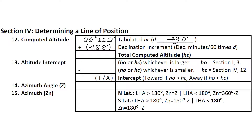Now we simply sum these two terms to get the computed altitude, abbreviated HC, remembering to subtract if we have a negative value. In our example, this gives us a computed altitude of 25 degrees and 52.2 arc minutes.